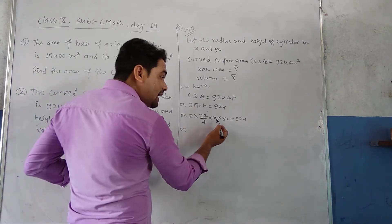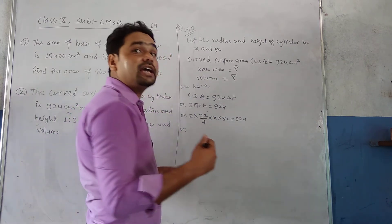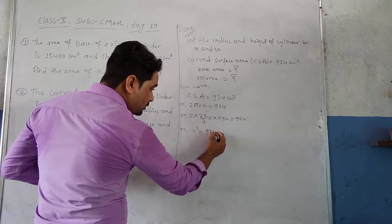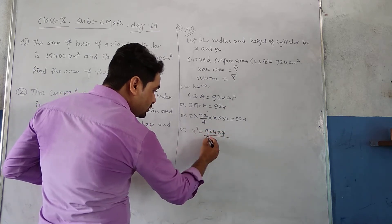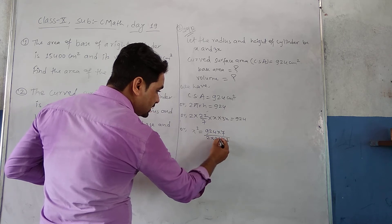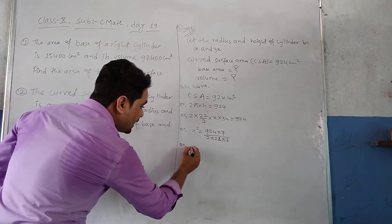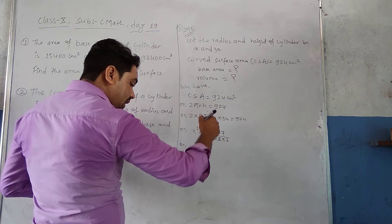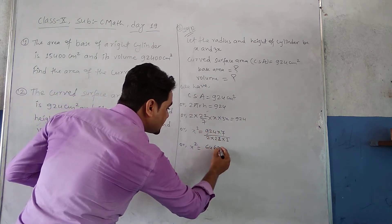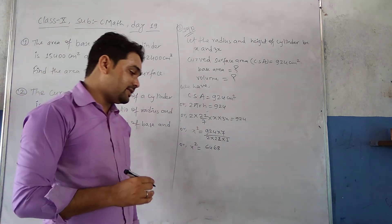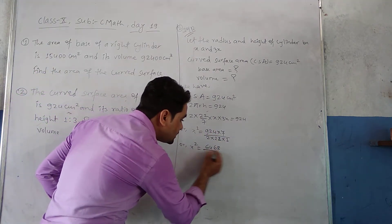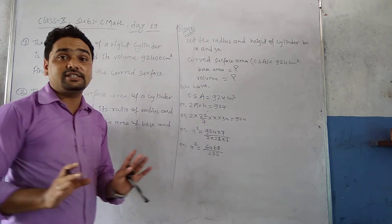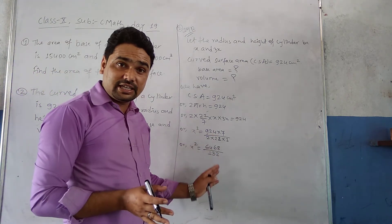Rearranging: x² = 924 × 7 ÷ (2 × 22 × 3). Numerator: 924 × 7 = 6468. Denominator: 2 × 22 × 3 = 132.